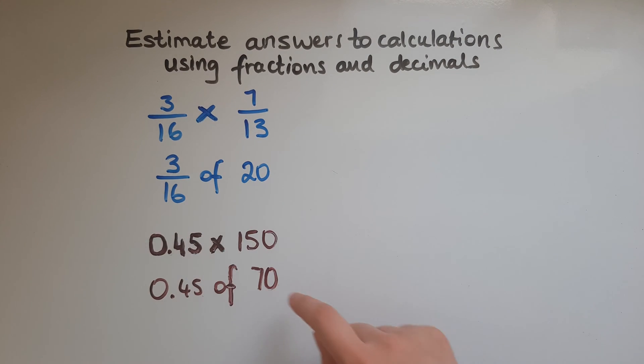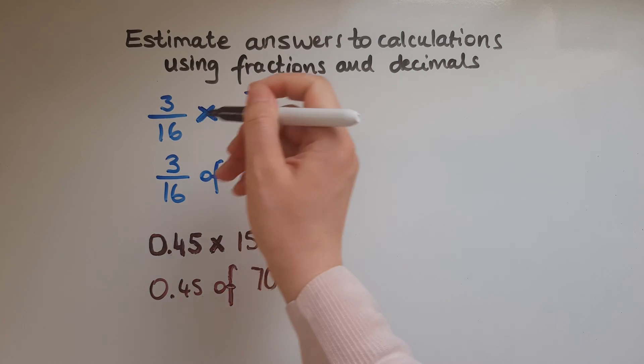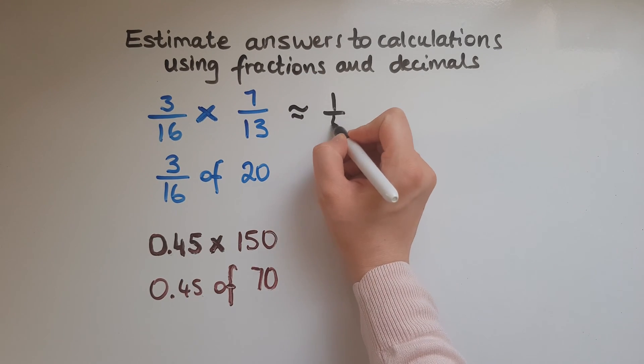And 4 is very close to the 3, so 3 is close to the 4. That means that this is about 1 quarter.